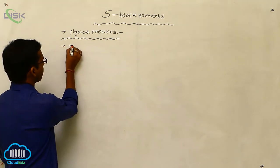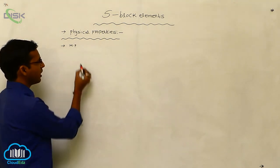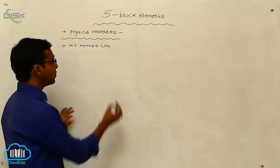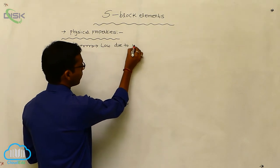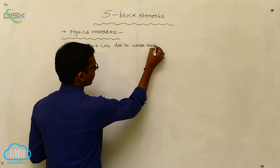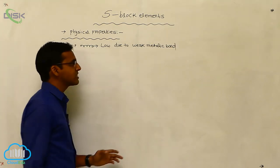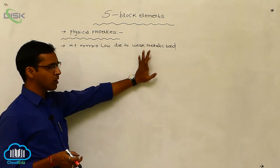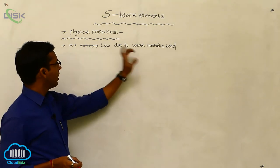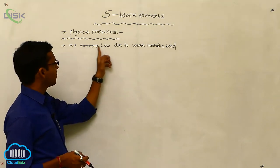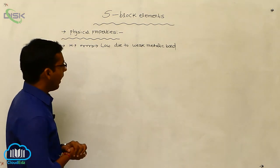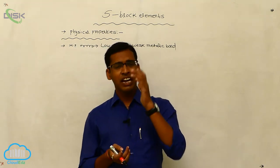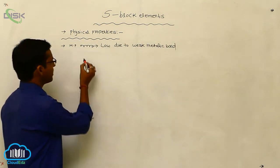The first group element melting points are very low. This is due to weak metallic bonds existing between the metals. Due to the presence of weak metallic bonds, the first group element melting point is very low. First group elements also exhibit different color properties.